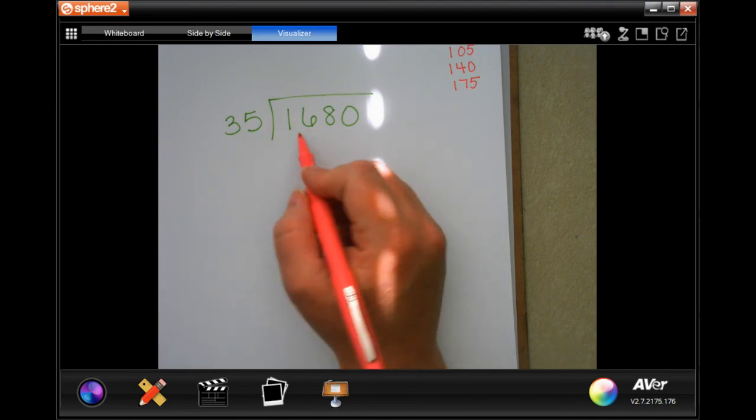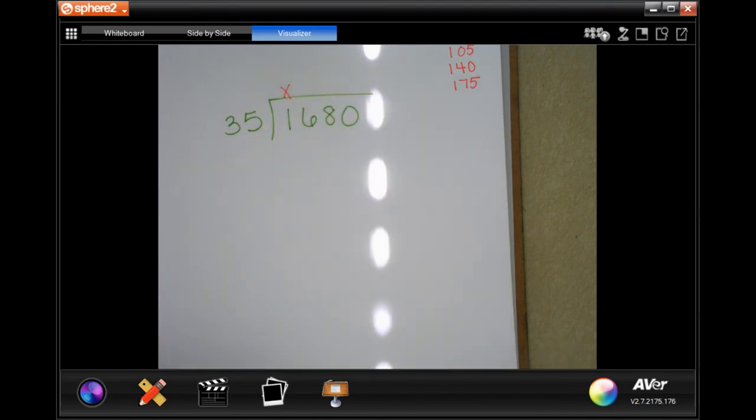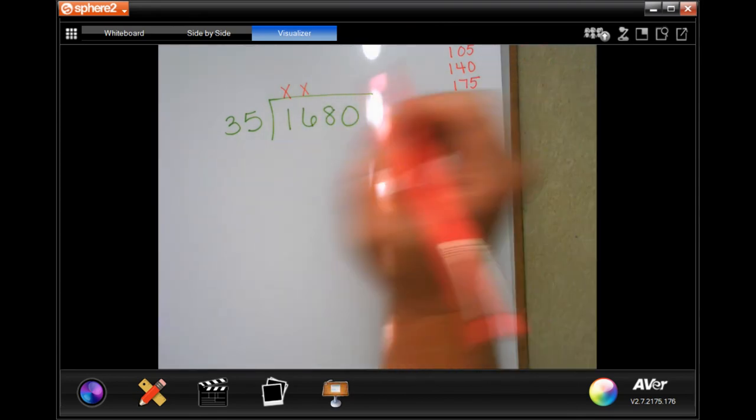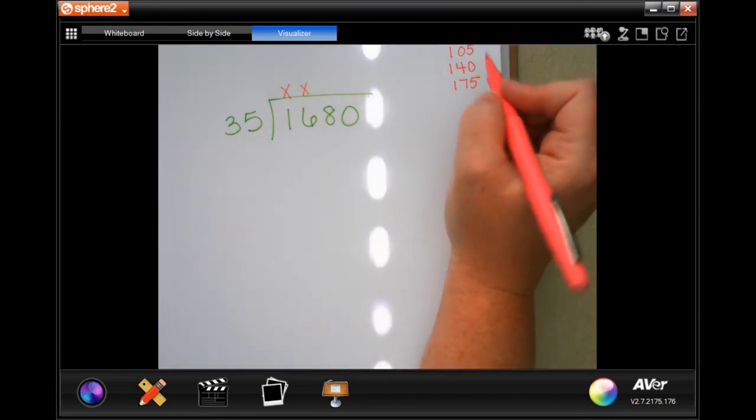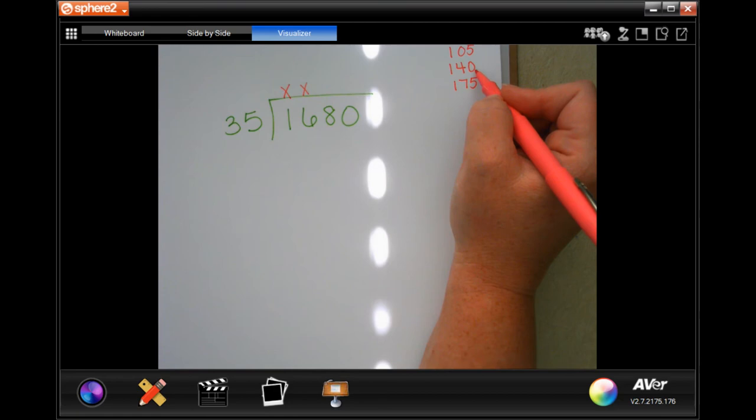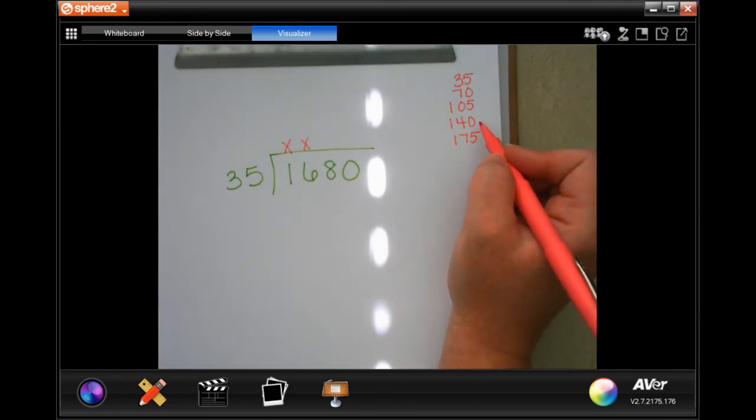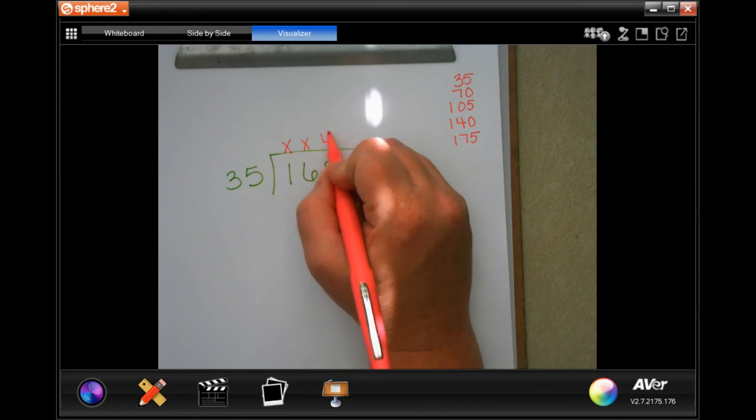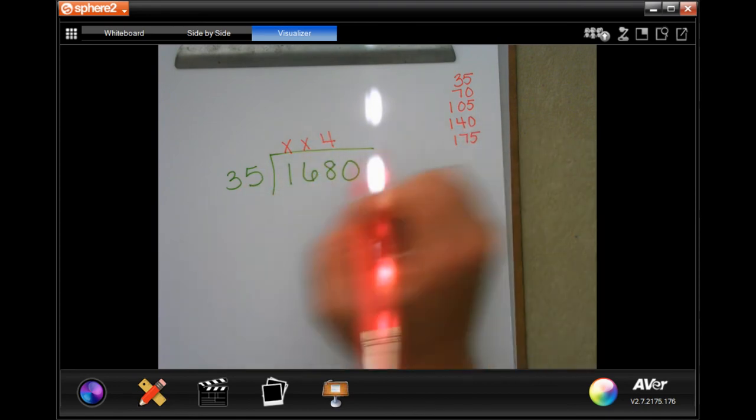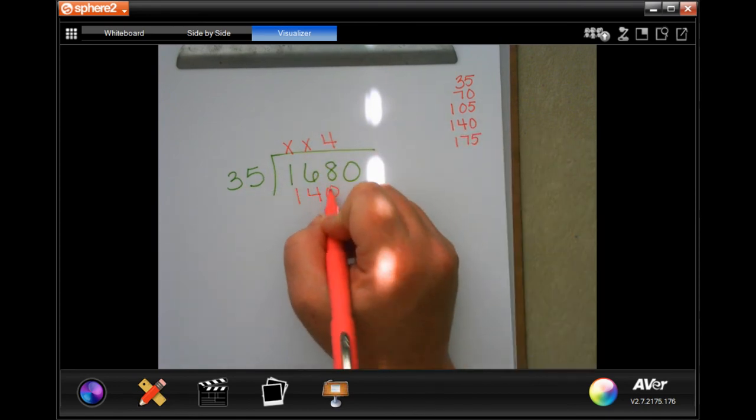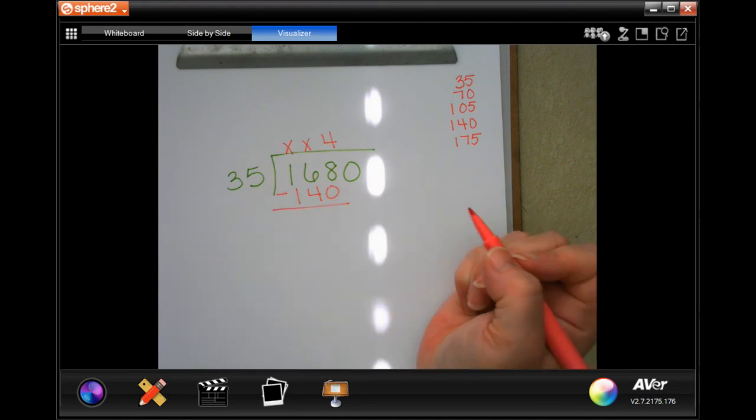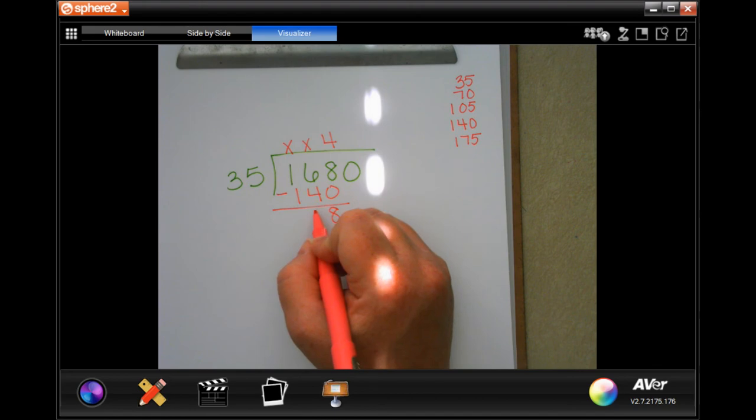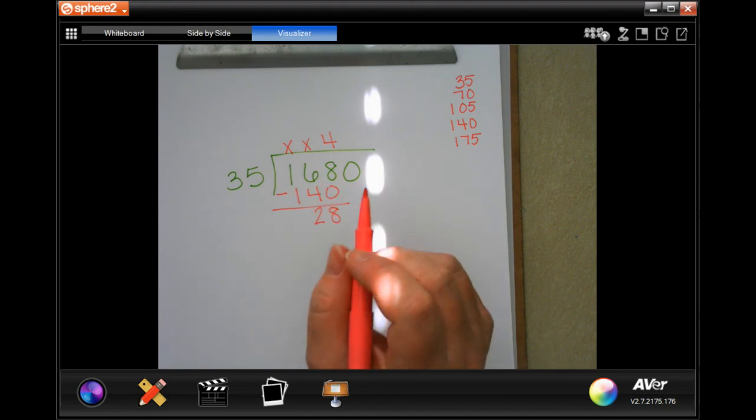So, 35 is not going to go into 1. I'm going to put a placeholder. 35 is not going to go into 16. I'm going to put another placeholder. 35 will go into 168. It looks like the closest I'm going to get without going over is 140. That's 1, 2, 3, 4 times. 4 times 35 was 140. I'm going to subtract. 8 minus 0 is 8. 6 minus 4 is 2. And I don't have to worry about the 1. Looks like I am going to have to go a little bit further, though.